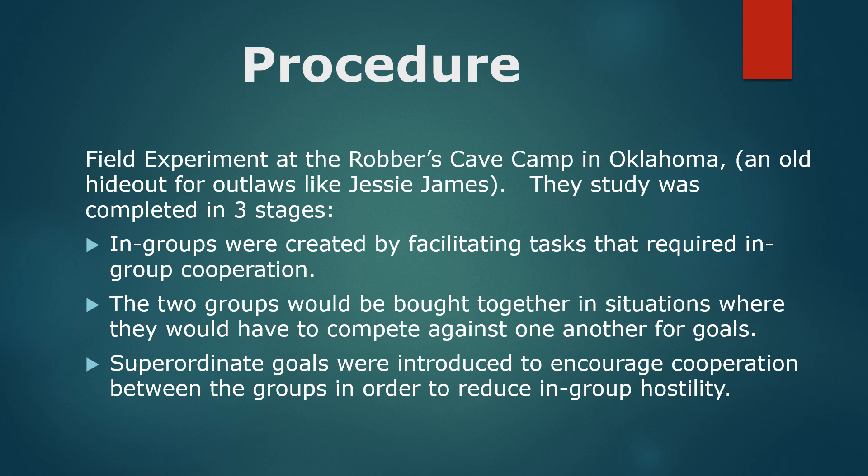The study was completed in three different stages. First of all, the in-groups were created — they facilitated tasks that required in-group cooperation, dividing the two sets of boys into what he called the Eagles and the Rattlers. The two groups were then brought together in situations where they had to compete against one another, to instigate elements of conflict between the two groups — things like tug of war. Finally, he brought in what he called superordinate goals, to encourage cooperation between the two groups and see how effective this was in reducing in-group/out-group hostility.